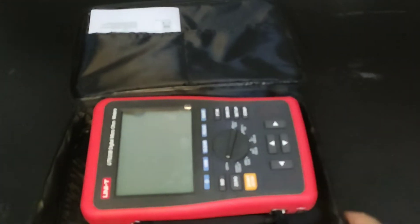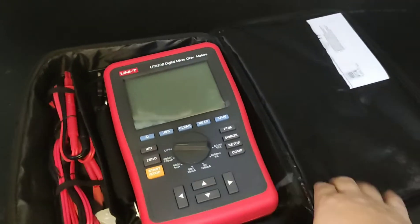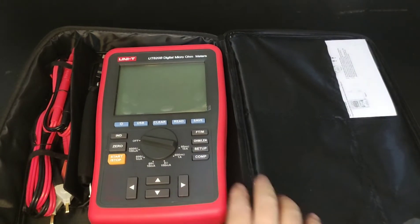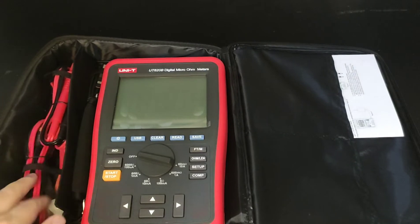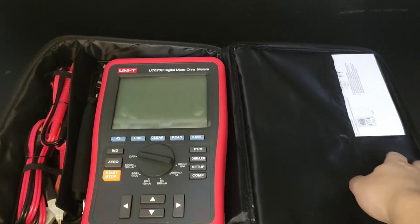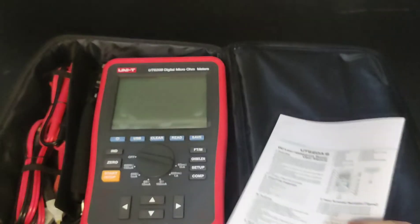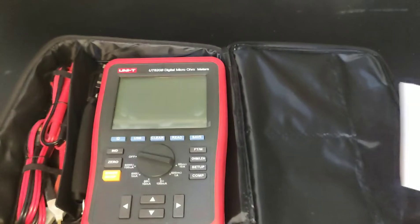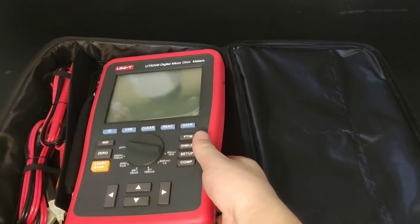Alright. We can see clearly in this package. This is the machine itself, the main body. Here are some cables. And this one is a menu. Let's put the menu aside. Bring out this machine.